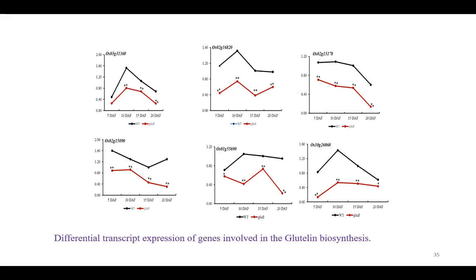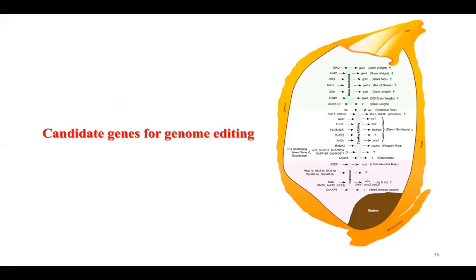So far we have studied only this one gene, but many other genes have been identified for nutritional quality, appearance quality, and cooking and eating quality. There is great possibility that genome editing technology can be used to unearth the genetic mechanisms behind these genes, how they control different traits, and how we can exploit them. Using CRISPR-Cas9 with more efficiency and precision, we can develop genotypes with better nutritional quality for future breeding programs.